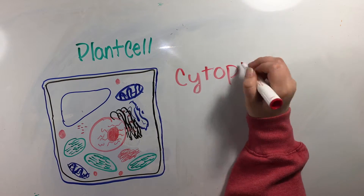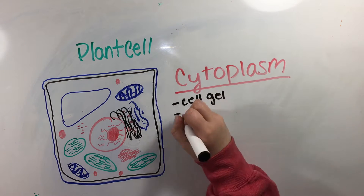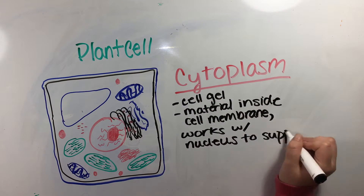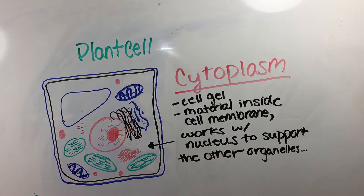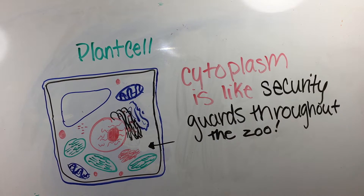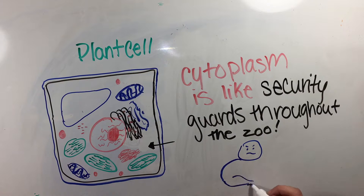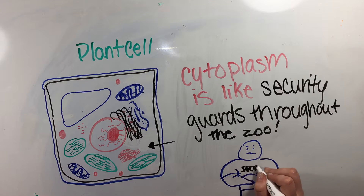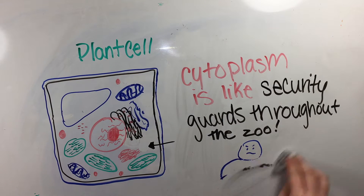Cytoplasm is material found inside the cell membrane and works with the nucleus to support and protect all the other organelles. The security guards throughout the zoo are like cytoplasm, since they roam the zoo and work with the main office to make sure the zoo is running efficiently, protecting the people, the animals, and all things within the zoo.